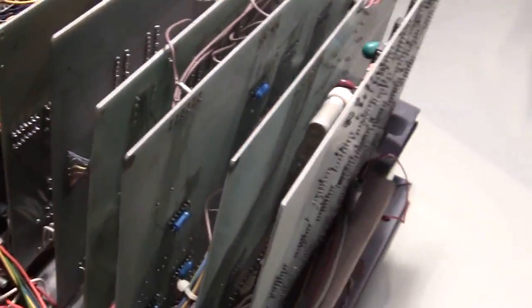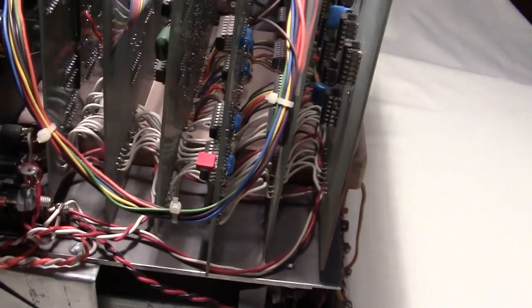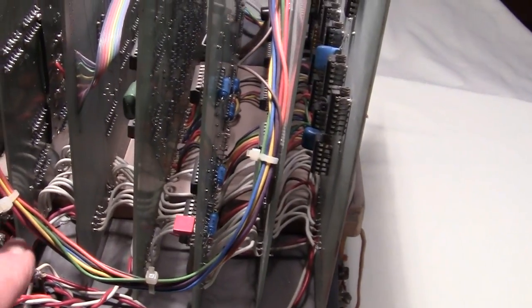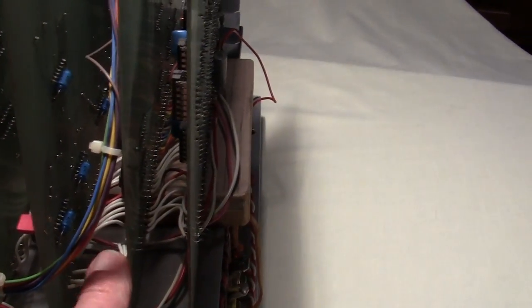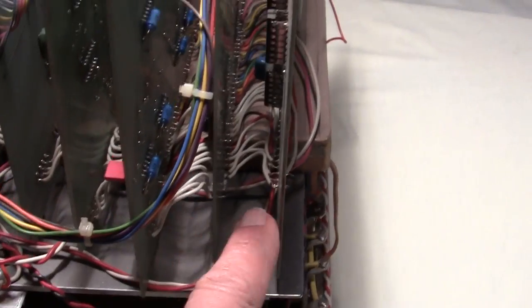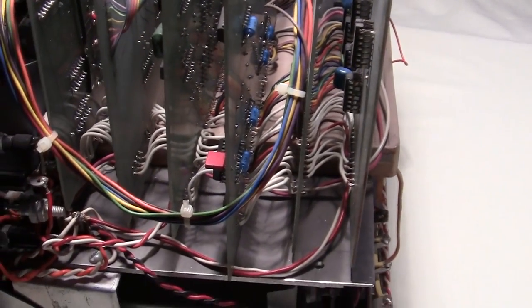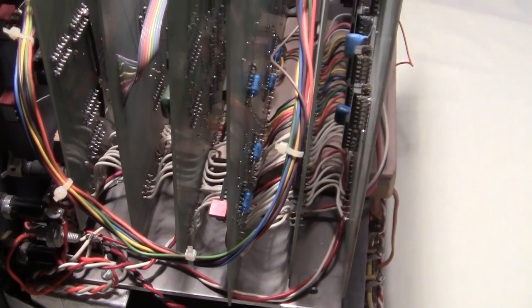Coming over here to the side and looking in, you can see the data bus is just these jumper wires down here at the bottom, jumpering each board together. So the data bus is a simple wire to wire to wire. There's no actual data bus other than the wiring of those wires together, but it worked and it worked quite well.